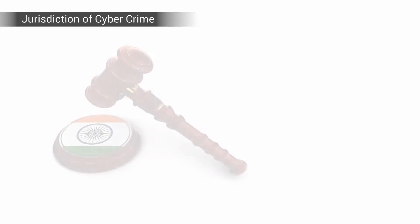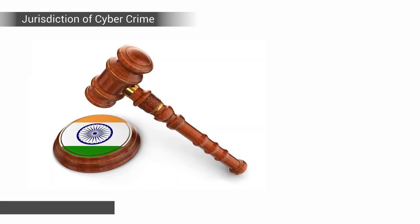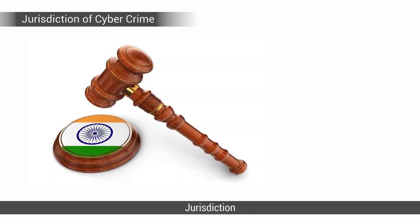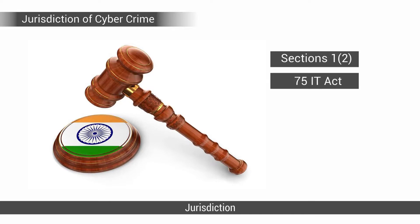Section 3 of IPC 1860 provides punishment for offences committed beyond India, which naturally brings cybercrimes along with its numerous issues concerning jurisdiction. There are two distinct provisions relating to jurisdiction in sections 1(2) and 75 of the Information Technology Act.